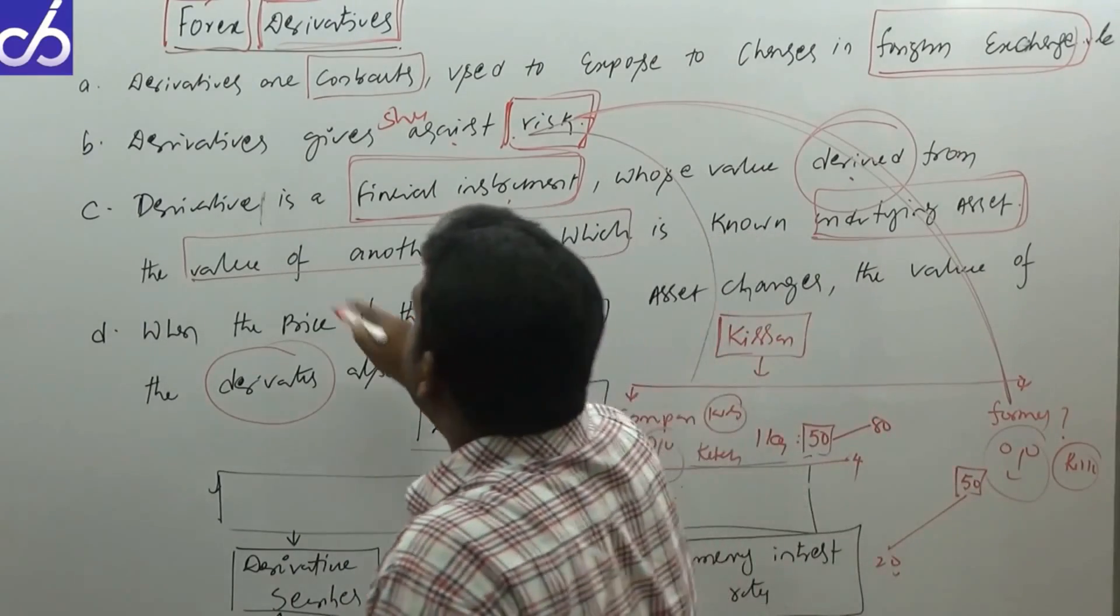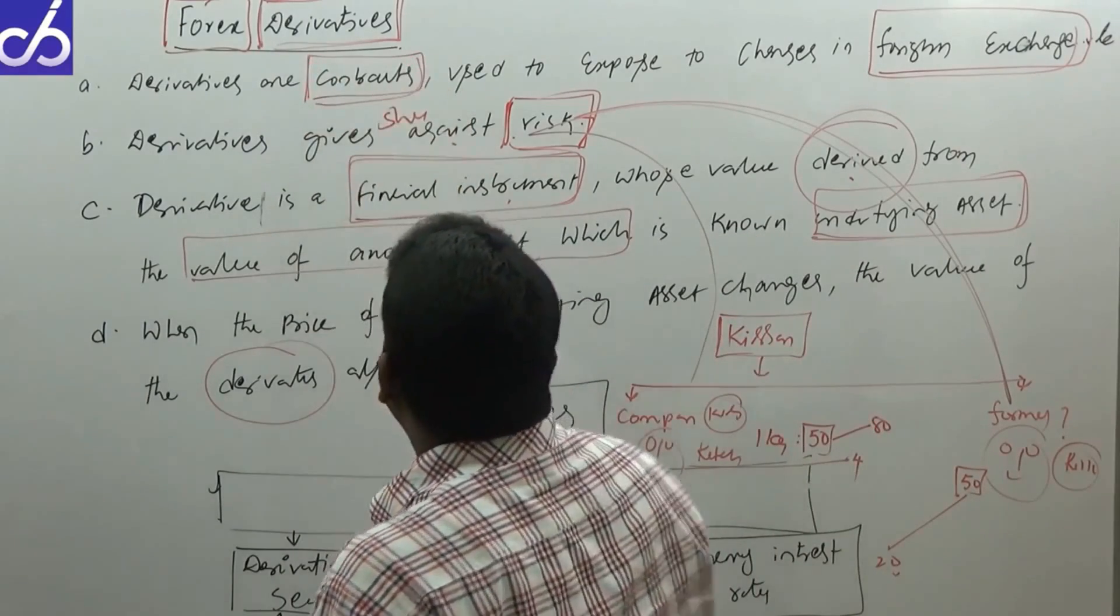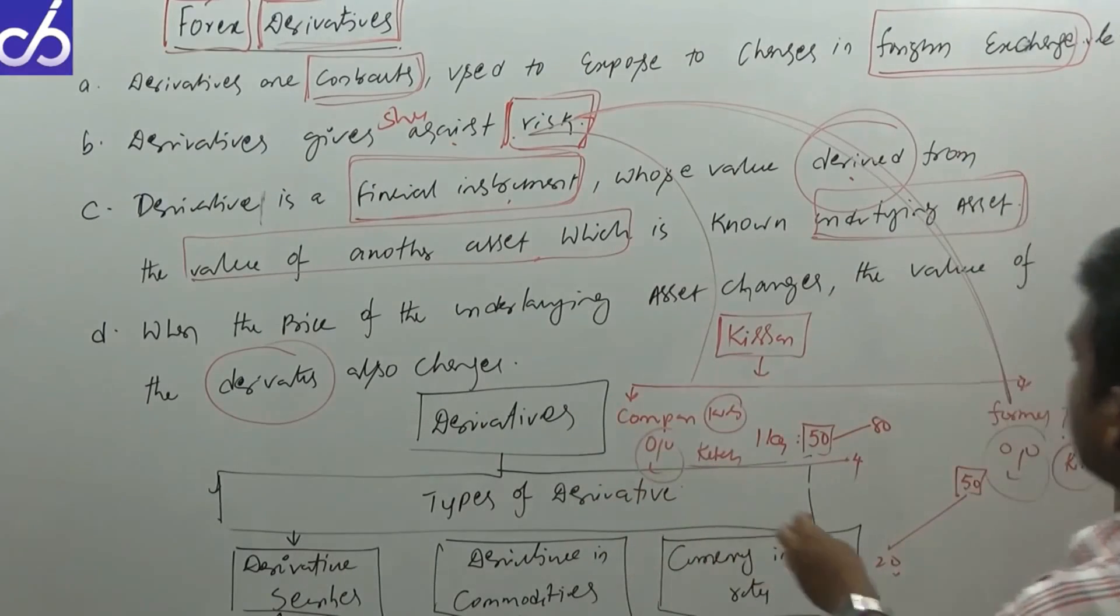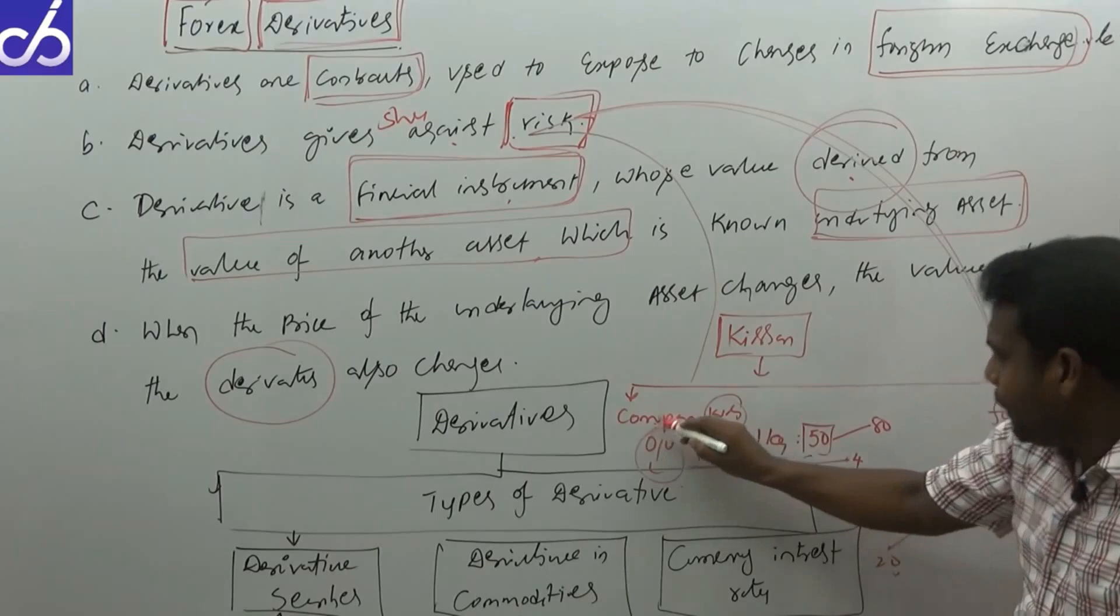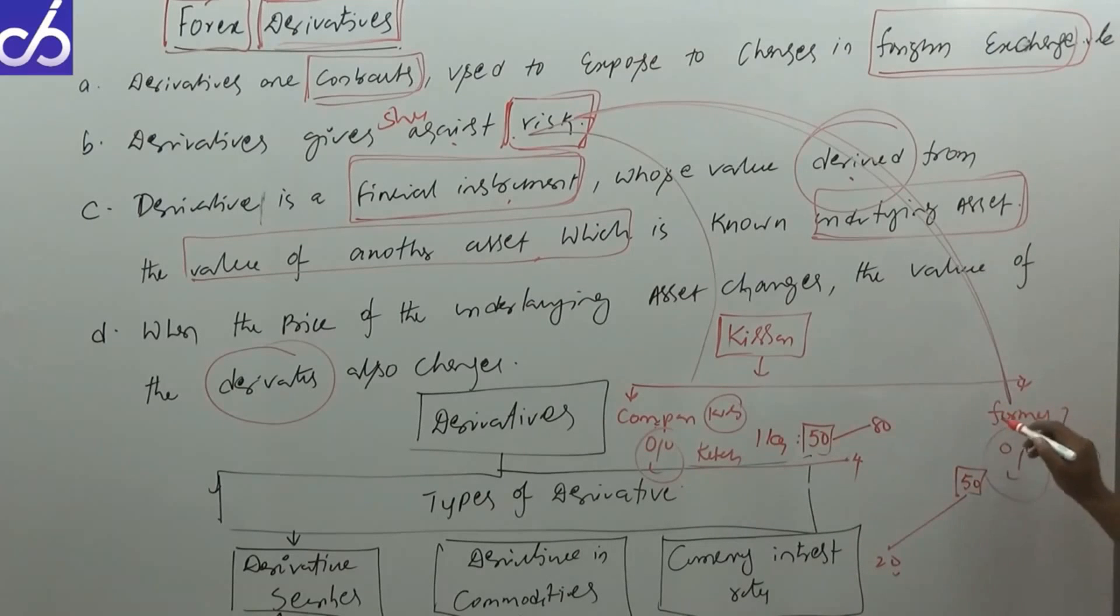Now what do they do? Both people come to an agreement. This is a contract. Both parties come to an agreement in such a way that at the end of the fourth month, they will buy the tomatoes at 60 rupees.